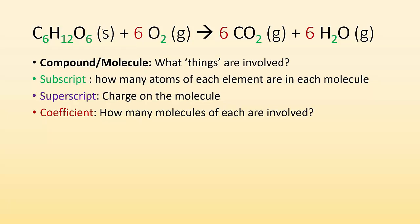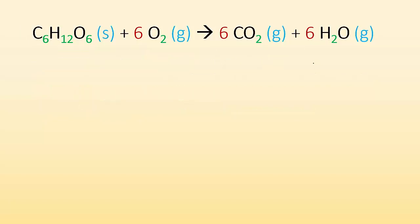What about the coefficients — these numbers that are in front of some of these things? They are telling you how many molecules of each are involved. Since there's no coefficient in front of the C6H12O6, I know that's just one. So there's one sugar molecule, and then I need six oxygen molecules, which gives me six carbon dioxides and six water molecules. The coefficient tells you how many of each are involved.